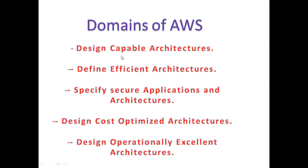The first domain is design capable architectures. It covers the critical information for designing and deploying highly available services and resources in the cloud. It includes choosing reliable and resilient storage, determining how to design decoupling mechanisms using AWS services, determining how to design multi-tier architecture solutions, and determining how to design high availability or fault-tolerant architectures.